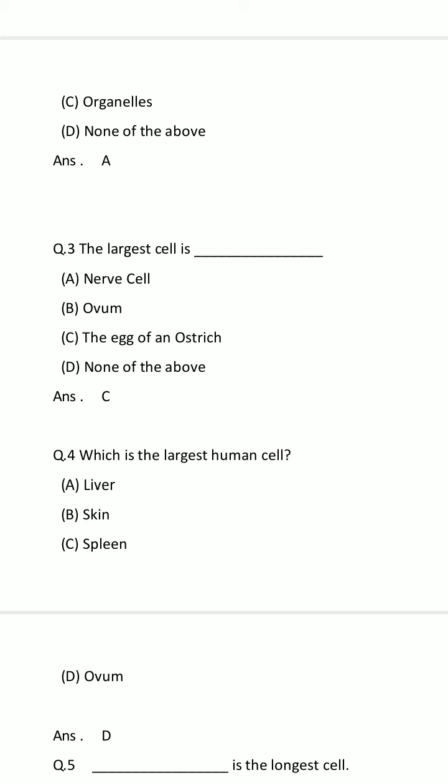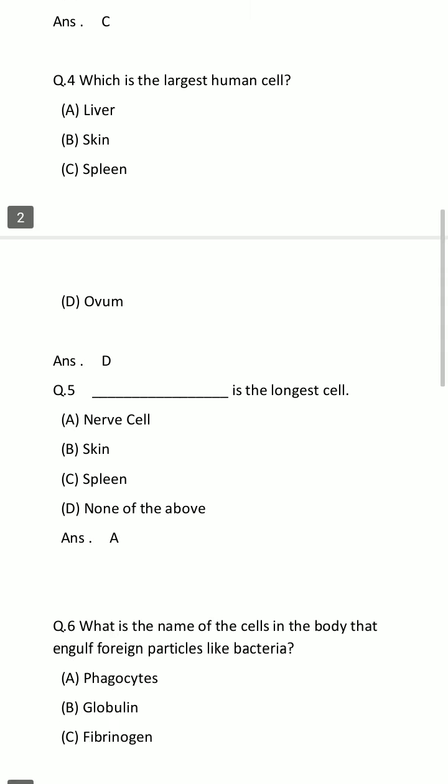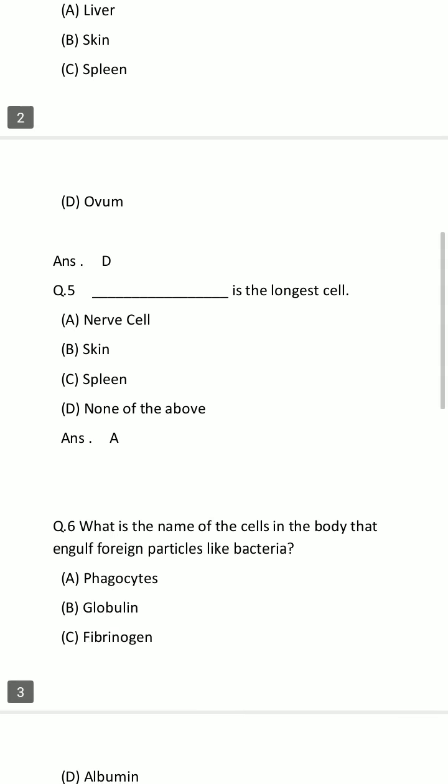Question number 4: Which is the largest human cell? Option A: Liver. Option B: Skin. Option C: Spleen. Option D: Ovum. Your time starts now. The time is finished. The answer is Option D: Ovum.